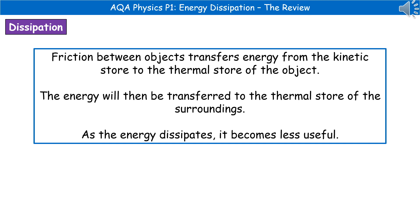In any machine that has friction, we will be transferring energy from the kinetic store of the moving part to the thermal store of the object. That thermal energy within the object will over time be transferred to the thermal store of the surroundings. The problem is that as energy dissipates, it becomes less useful to us. The more energy we transfer to the thermal store of the surroundings, the less energy goes into those useful stores, and therefore we're wasting a greater proportion.